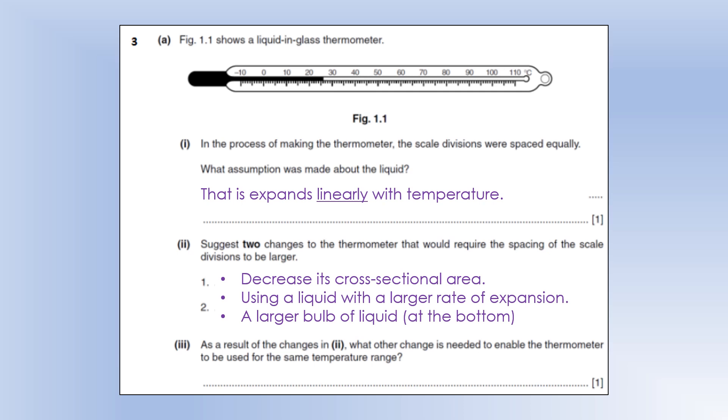Okay, so suggest two changes to the thermometer that would require the spacing of the divisions to be larger. If we made it thinner, or if we decrease its cross-sectional area, that would mean the height change would be much bigger for each degree of temperature change. If we use the liquid with a larger rate of expansion, that would mean we need the larger divisions. And if we had a larger bulb at the bottom, that would as well. Because if we have a larger bulb at the bottom, we've got a bigger volume of liquid. And so if overall, say, let's say when we increase the temperature by one degree, its volume increases by one percent, that would actually be a bigger height change on the thing. So that's one option. It's probably the first two were probably the ones they were looking for there, but technically you could say a larger bulb of liquid at the bottom too.